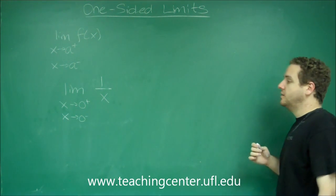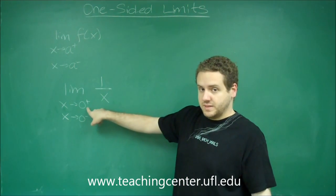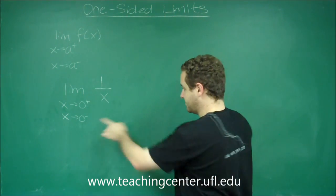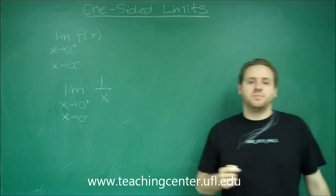So what we need to do is consider very small positive numbers as we approach zero from the right and very small negative numbers as we approach zero from the left.